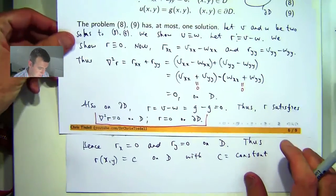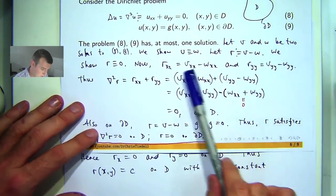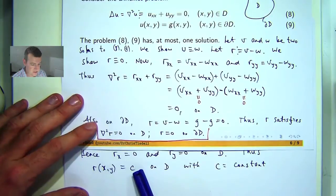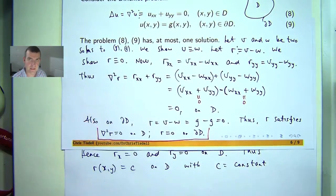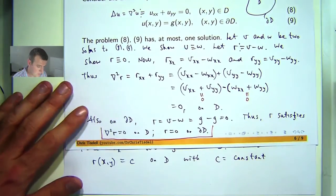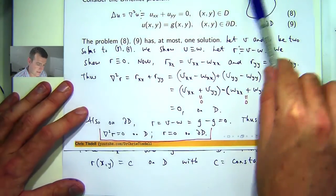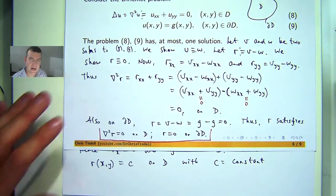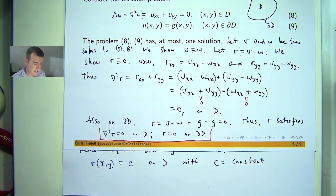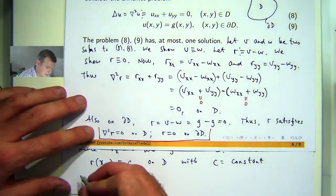Well, what I'm trying to do, remember, is to show that R is identically equal to 0. So if I can show that this C is 0, then that's essentially enough. Well, we know that R is equal to 0 on the boundary of the set D. Now, because R is continuous and R is constant on the interior, the only way this can happen due to continuity is if this C is 0.